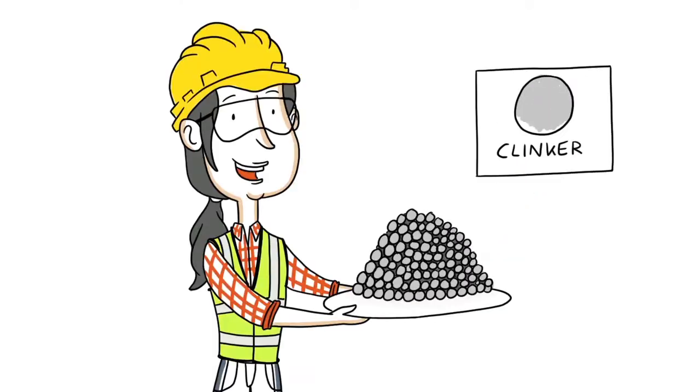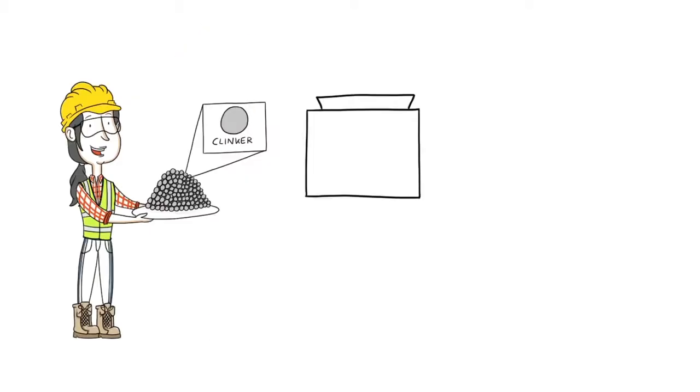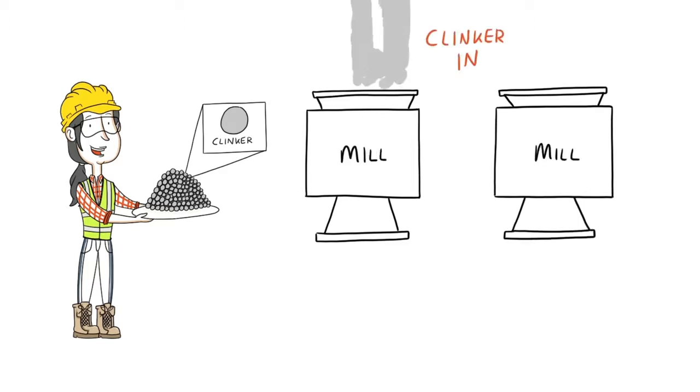The clinker is cooled as it leaves the kiln. The clinker is tested, and once it meets the right standard, it is milled into fine grey cement powder.